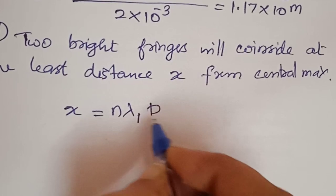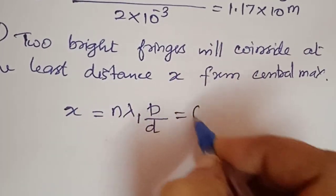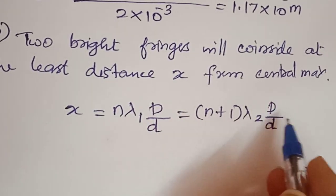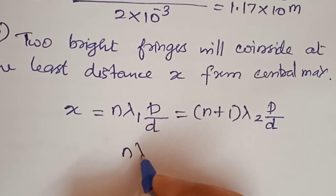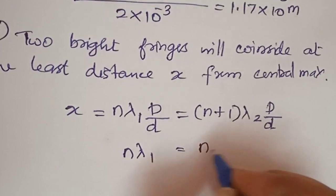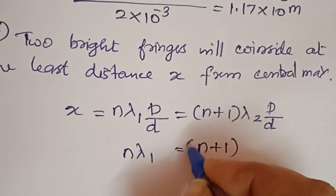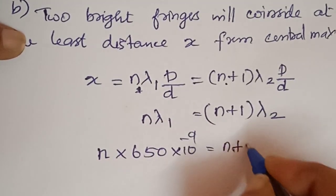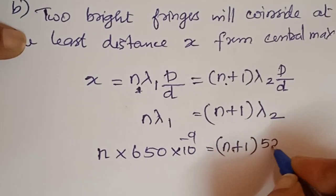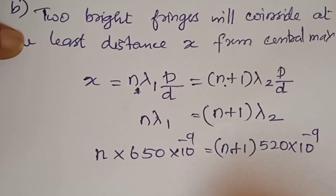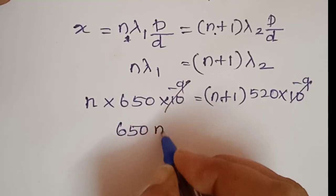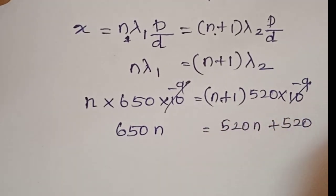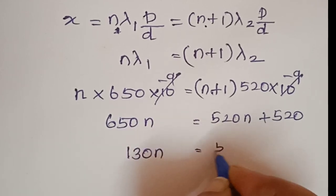For the second part, we find the least distance from the central maximum where bright fringes due to both wavelengths coincide. The condition is n into lambda 1 equals n plus 1 into lambda 2. So n into 650 into 10 to the power minus 9 equals n plus 1 into 520 into 10 to the power minus 9. Solving: 650n equals 520n plus 520, giving 130n equals 520, therefore n equals 4.